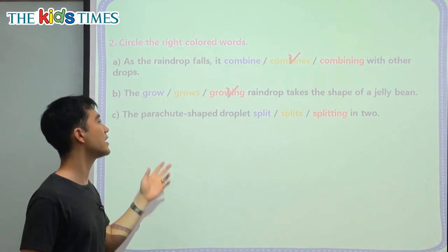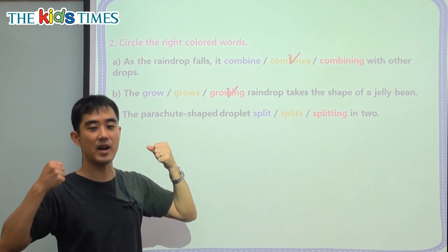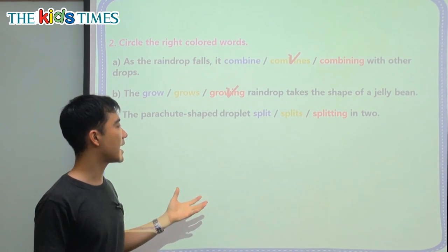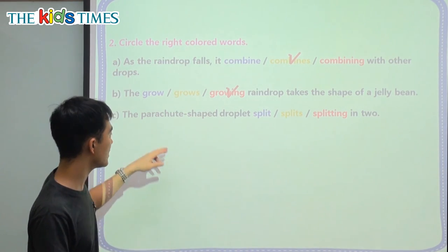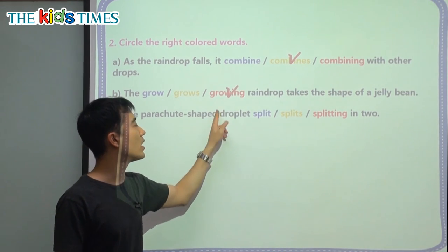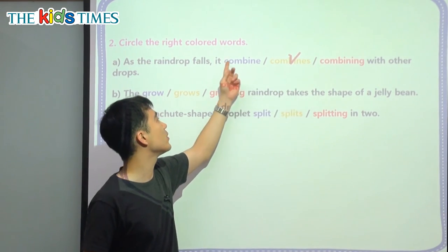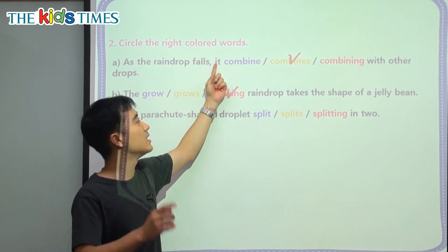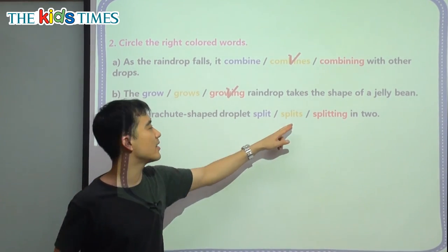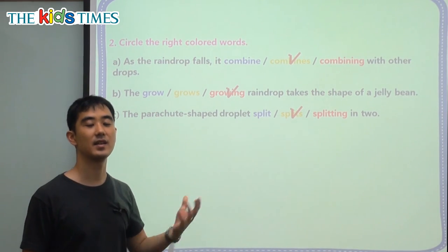C: the parachute-shaped droplet — the parachute, of course, is the big fabric that people jump from planes with and go down from the sky — blank in two. This is similar to the first one: we're talking about one thing, a droplet, so we have to put the S at the end. We're talking about one 'it,' so we have to put the S. So it is 'splits.'